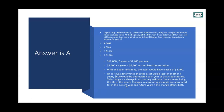Changes in accounting estimate — the estimate being the useful life of the asset — are accounted for in the current year and future years. In year five, the income statement will show $600 of depreciation expense. This continues into years six, seven, and eight until all $2,400 of book value is used up. A change in accounting estimate is handled prospectively, meaning currently and in future years. We don't go back and change anything from years one through four.